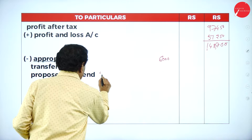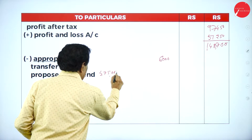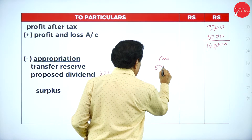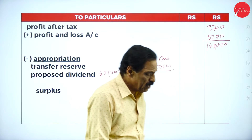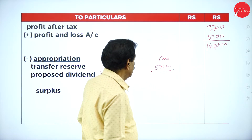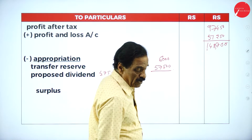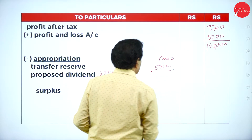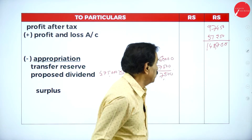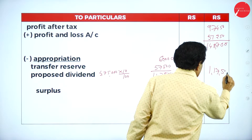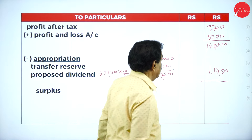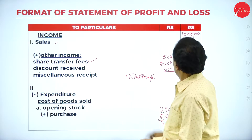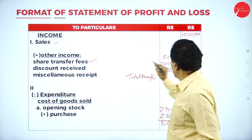Appropriations: transfer to general reserve ₹6,000. Proposed dividend on share capital ₹5,75,000 at 10% = ₹57,500. Adding both appropriations: ₹6,000 + ₹57,500 = ₹63,500. Wait — share transfer fees is ₹60,000 and total appropriations are ₹1,17,500. Deducting from ₹1,48,700, the surplus = ₹31,200.